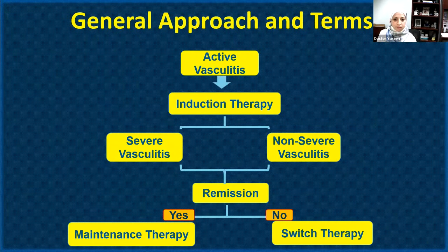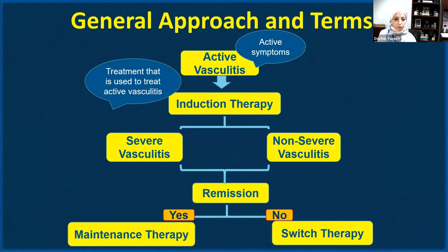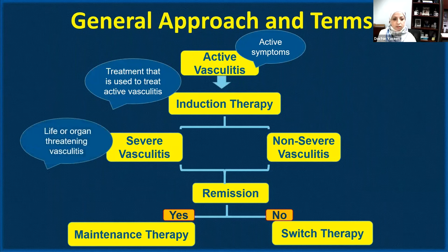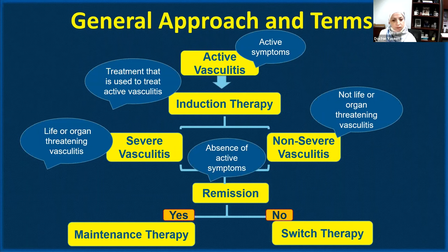As a general approach for patients with active vasculitis — whether a new patient or someone with relapse — when we feel their disease is active, we choose induction therapy. Induction therapy is a strong immunosuppressive therapy that mainly includes high-dose glucocorticoids or prednisone, plus a second agent chosen based on the severity of the active vasculitis. Severe vasculitis means life- or organ-threatening vasculitis, such as renal failure or neuropathy, versus non-severe vasculitis like sinus disease, joint, or skin involvement.